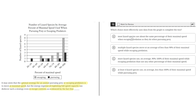Option A says most lizard species use about the same percentage of their maximal speed when escaping predation as they do when pursuing prey. This graph shows the number of lizard species by average percent of maximal speed used when pursuing prey or escaping predators. Option A is incorrect because the graph doesn't show a side-by-side comparison of the same lizard species' speed when they're escaping and when they're pursuing. So A is incorrect.